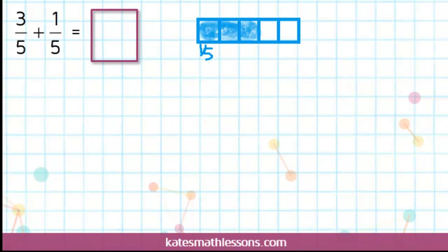Now to add 1 more fifth to that fraction, 3 fifths plus 1 fifth, that means I need to add in 1 more box. If I color in 1 more box, I've added a fifth.